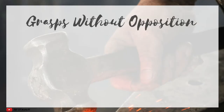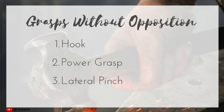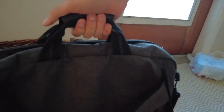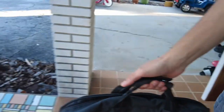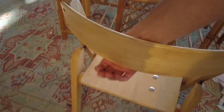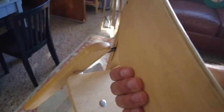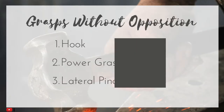Common grasp patterns that do not include opposition include the hook grasp, the power grasp, and the lateral pinch. The hook grasp is when somebody's holding items primarily by the four fingers, and the four fingers are flexed. A classic example of this would be carrying a briefcase. Also think about groceries, picking a chair up by the back of the chair, or holding the ear of a mug.